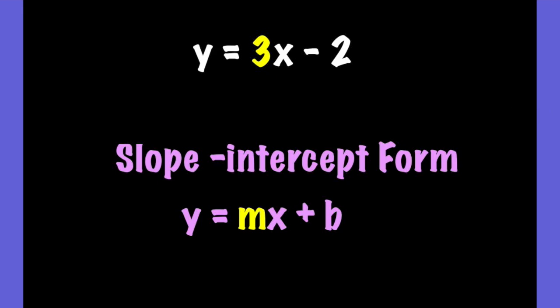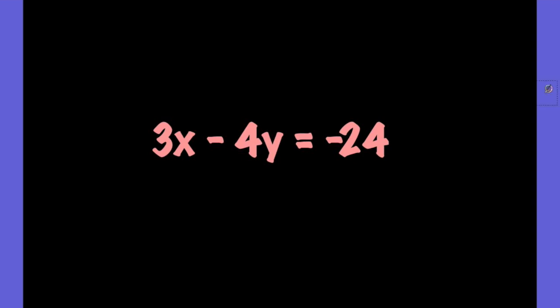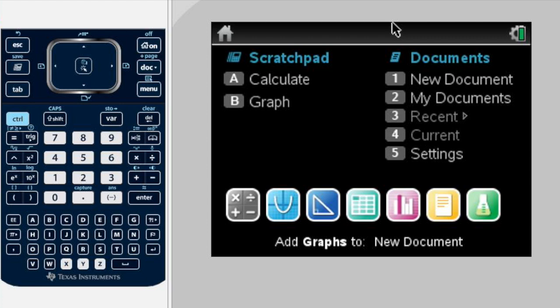But if instead we are given the equation 3x minus 4y equals negative 24, we are not going to be able to see the slope right away. In this case, we are going to use our TI-Nspire.